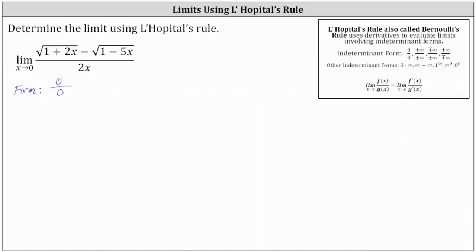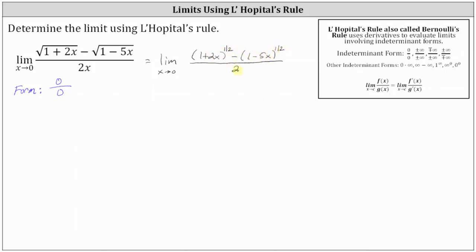Before we apply L'Hôpital's rule, let's write the numerator using rational exponents, where we have the limit as x approaches zero of the quantity one plus two x to the power of one half, minus the quantity one minus five x raised to the power of one half, all divided by two x.